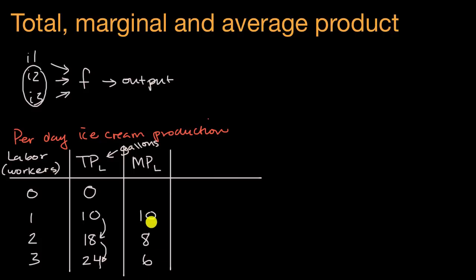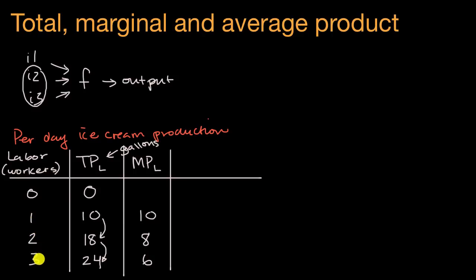There's something interesting here that is actually pretty typical: your marginal product of labor will oftentimes go down the more and more people you add. Why is that? They're just not going to be quite as productive. That second person might be waiting while the first person is using the mixer. That third person is going to be waiting while the first and second person are occupied. And if you had four, five, or six people, at some point you're not even going to be able to fit people into the factory. This is known as diminishing marginal return. As you add more and more labor, your marginal return gets smaller and smaller.